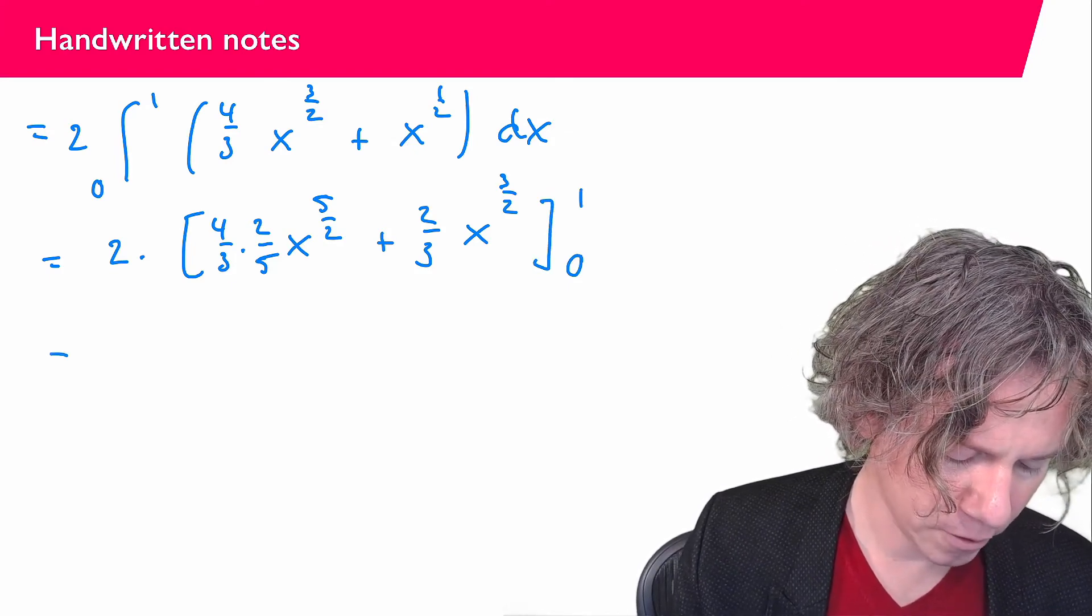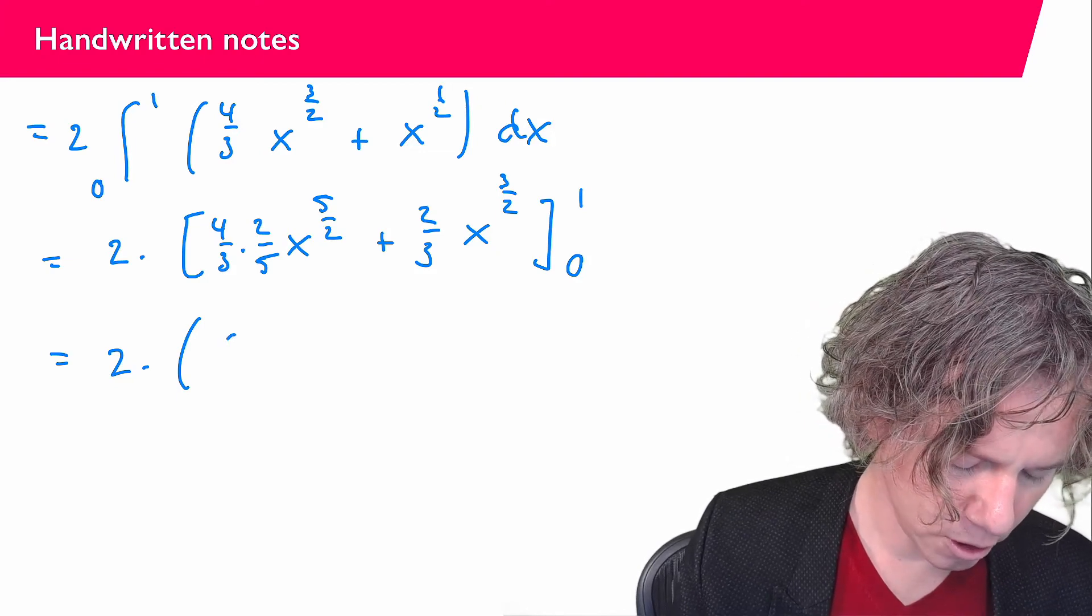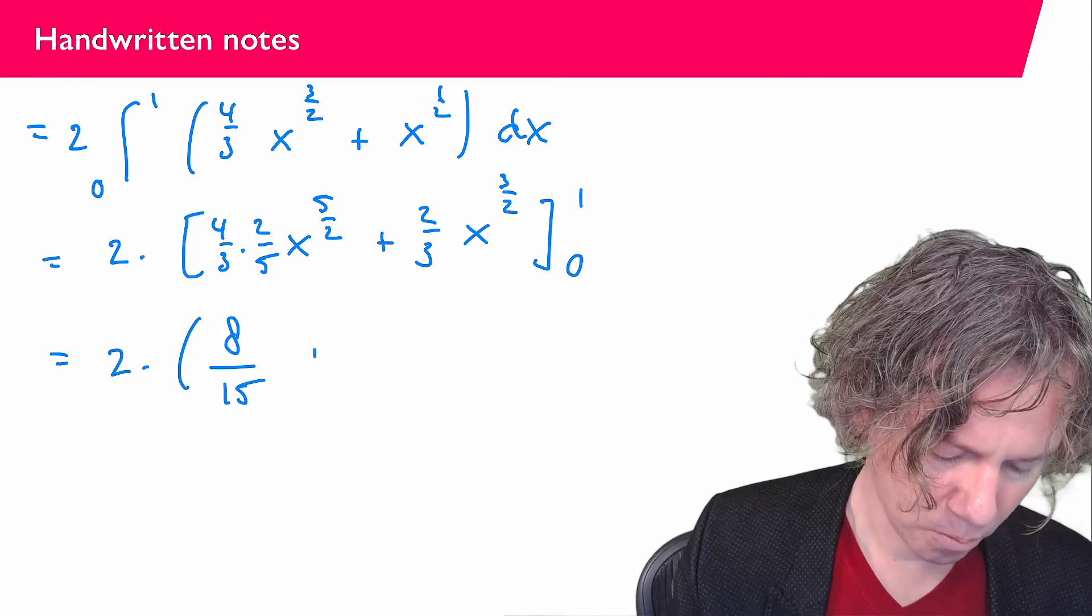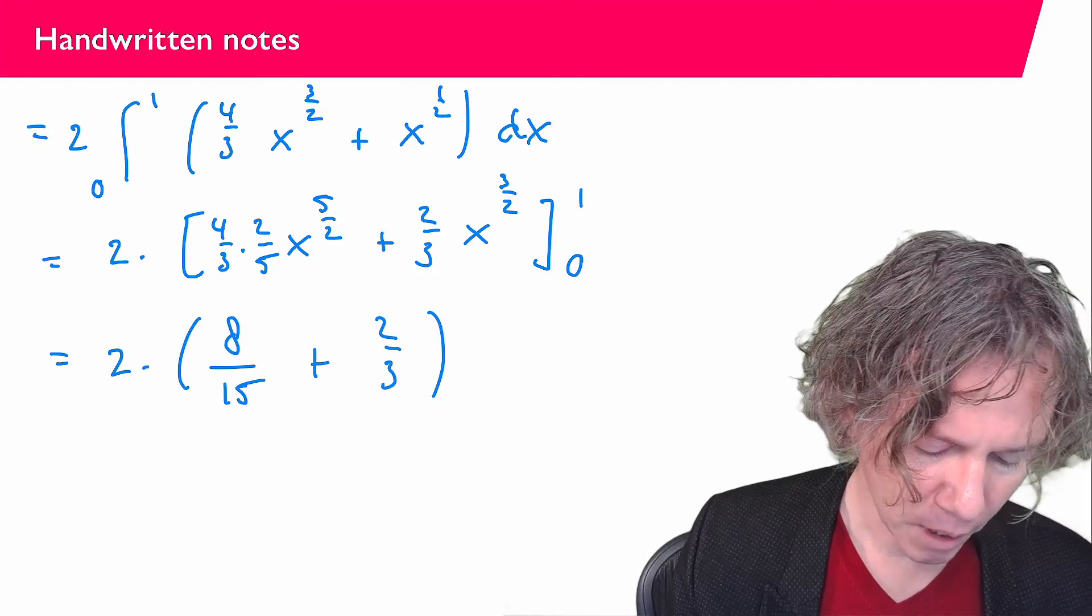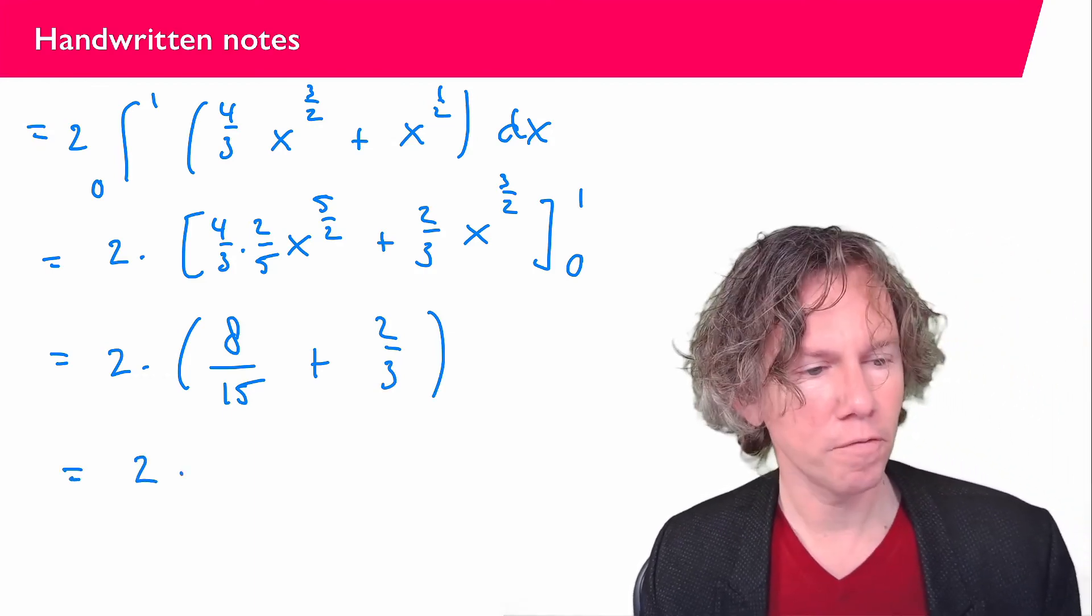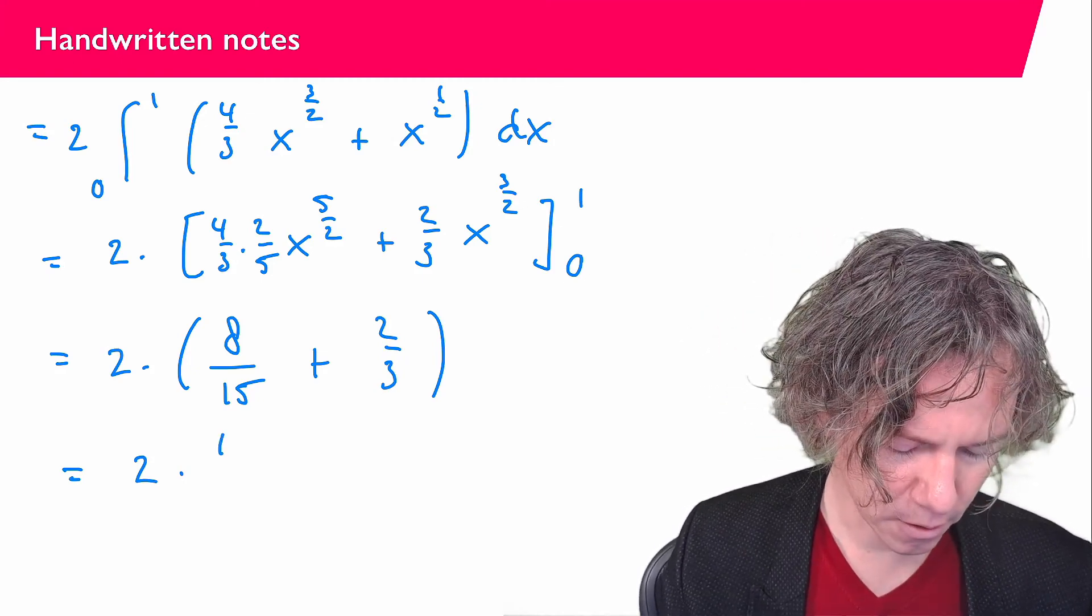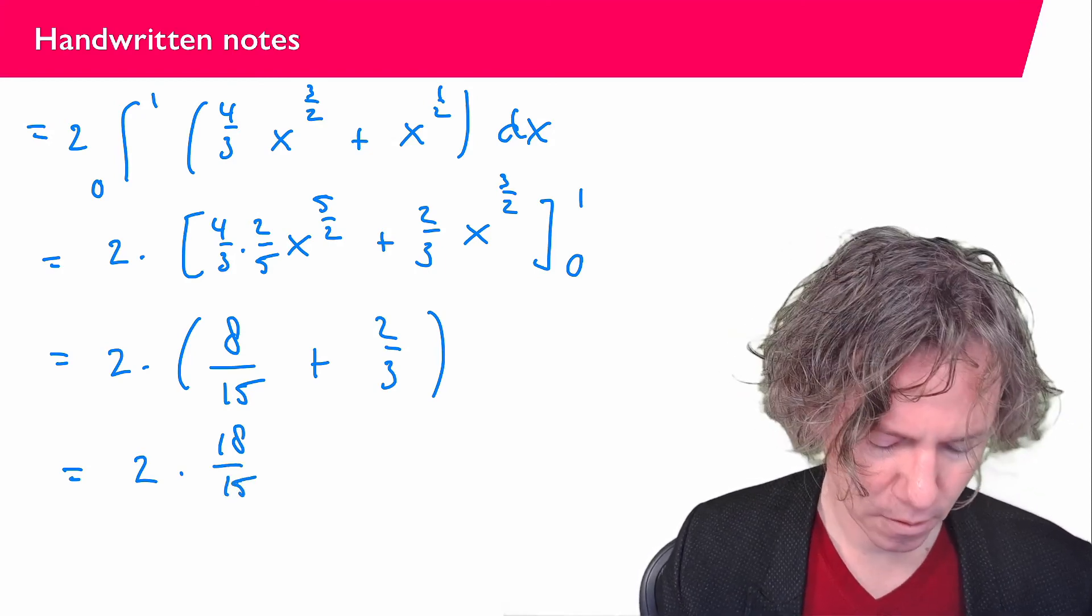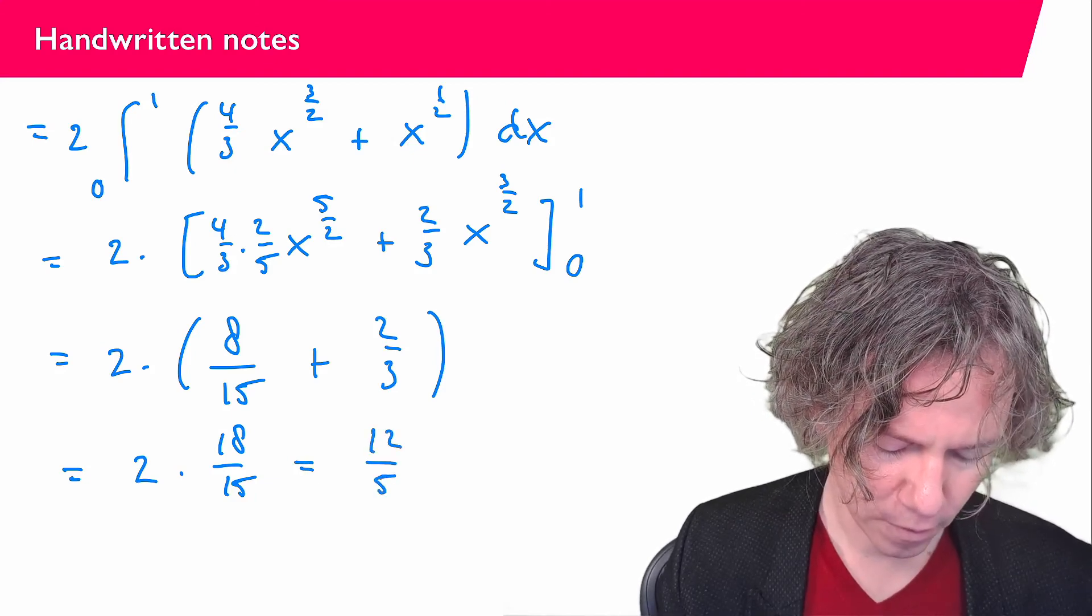So apparently what we find is 2 times and then we have 4 times 2 is 8, 3 times 5 is 15 plus 2 over 3. So if you take them together then we get 8 over 15 plus 10 over 15 so that's 18 over 15 which you can simplify to 12 over 5.